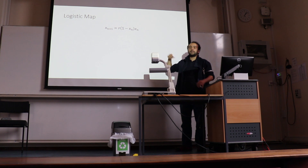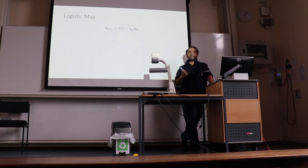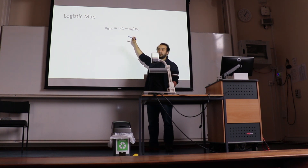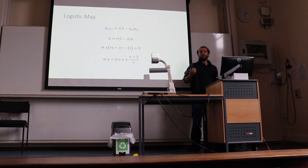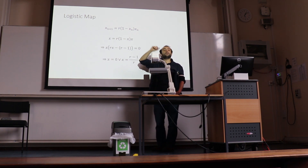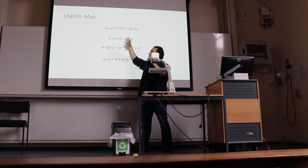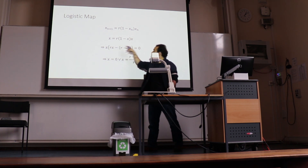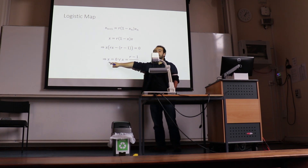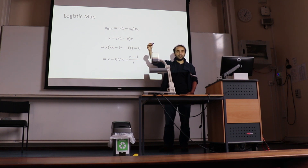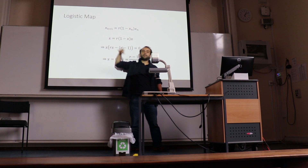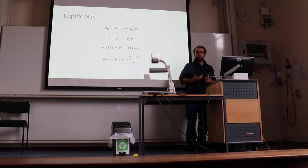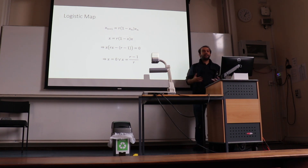The immediate question in economics is: which is the equilibrium, the steady state of the population? Which population, if I plug it in today, will give me exactly the same population tomorrow? To find that, I set x equal to a parameter times (1 − x) times x. I factorize and find two solutions: population is zero — no one reproduced, no one is there — or this ratio, where if I plug it in, I get the same population next period. That is the model, the steady state, the equilibrium. Everything is nice.